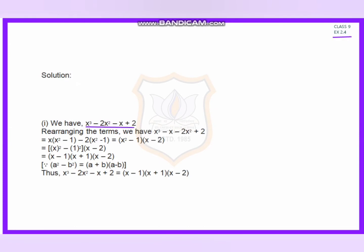Question 1: x cubed minus 2x squared minus x plus 2. First I rearrange the terms as x cubed minus 2x squared minus x plus 2. From the first two terms I take common x squared, leaving bracket x minus 2. From the last two terms I take common minus 1, leaving bracket x squared minus 1. Taking x squared minus 1 as common, the remaining factor is x minus 2. Now x squared minus 1, using the formula a squared minus b squared equals (a minus b)(a plus b), gives (x minus 1)(x plus 1). So the full factorization is (x minus 1)(x plus 1)(x minus 2).